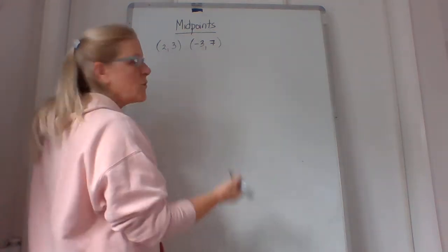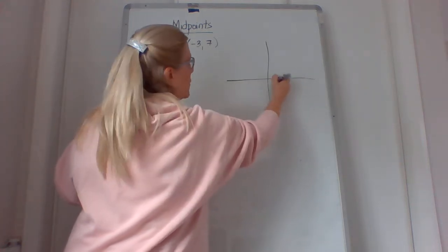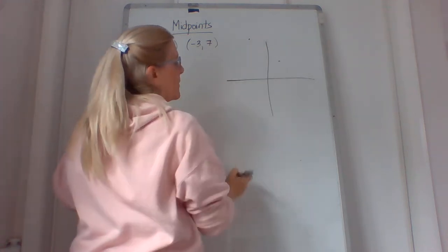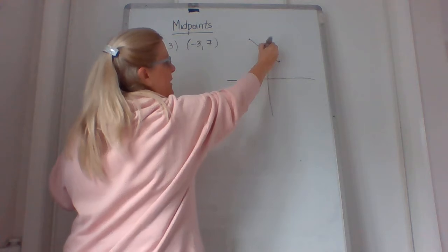We could draw a picture of them. I'll draw a sketch. So if I draw a sketch of it, I've got (2, 3), and (-3, 7), somewhere up here. So if I draw a line, I can find somewhere in there is halfway.